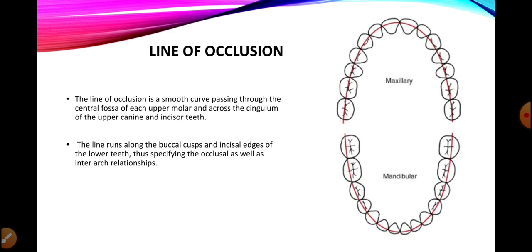Normally, the maxillary dentition is slightly wider than the mandibular dentition, and when they come into occlusion the maxillary dentition overlaps the mandibular dentition. Here in this picture we can see a red line known as the line of occlusion, which marks the occlusal contact point established when the maxillary teeth come into contact with the mandibular teeth.